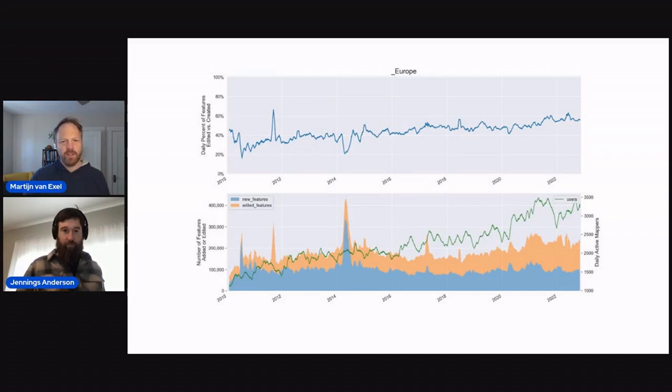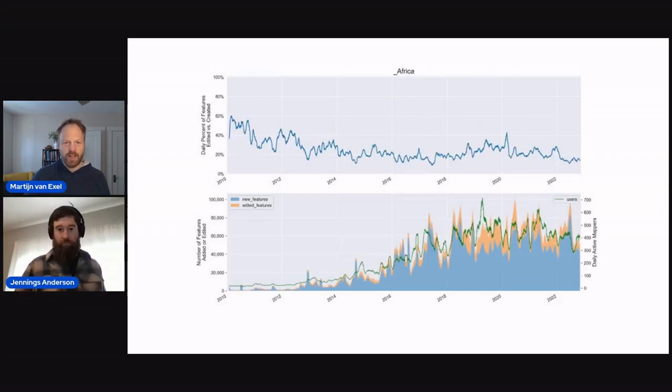So just to skip right ahead, I'll go into a few continent level charts. You see here in Europe where you see a gradual, very gradual increase from 40 to about 55% updates, and also a very steady growth of active users on a day by day basis, and it comes very consistent, fairly consistent new feature creation of about 100,000 features a day. If you look at Africa, you see a very different picture, right? So you see a map that is much more in creation mode still, and actually it hovers down around 20% update versus creation for a while.